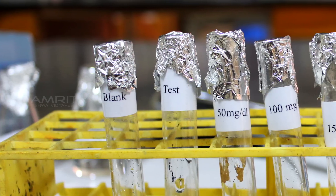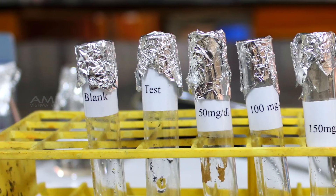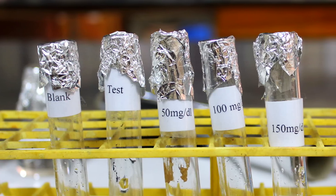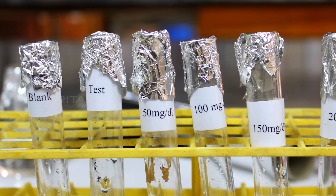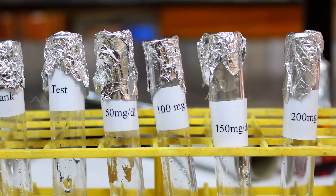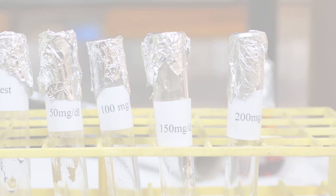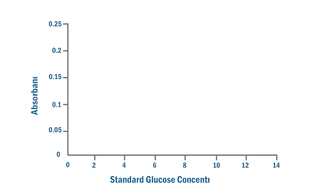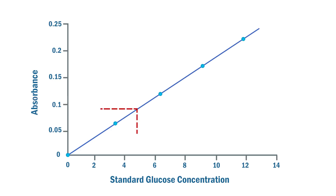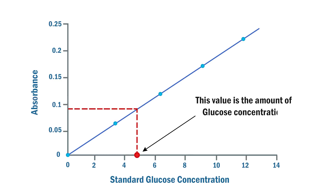Similarly, note the reading of 100 mg per deciliter, 150 mg per deciliter, and 200 mg per deciliter solutions, and the test solution. Plot a graph by taking the standard glucose concentration on the x-axis and the corresponding absorbance on the y-axis. From this standard graph, the amount of glucose concentration in the test solution can be obtained.